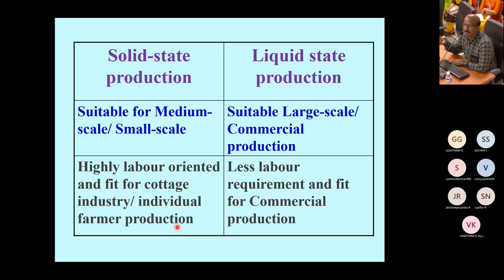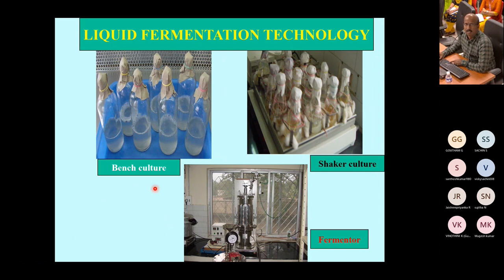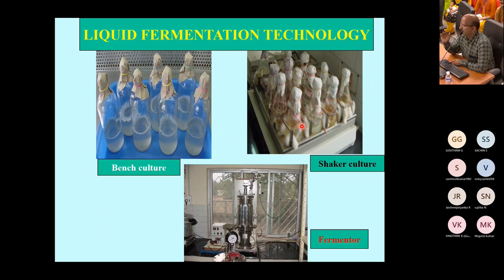For liquid fermentation, we use bench culture, shaker culture, and fermentor — three different methods. Using SDY broth as the standard medium, bench culture takes 10–15 days for growth. Shaker culture reaches the required concentration of 10^8 CFU (as recommended by CIBRC, Central Insecticide Board Registration Committee, Faridabad) within 7–8 days.